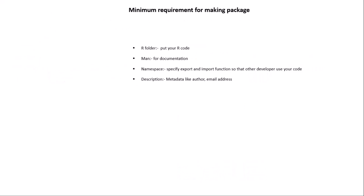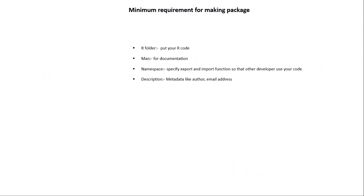This is the minimum requirement for making a package. There are four things: the R folder, where you put your R code; the man folder, which contains documentation files; the namespace, where you specify export or import functions so other developers can use your package; and the description file, which contains metadata like author's name, email address, and other details.